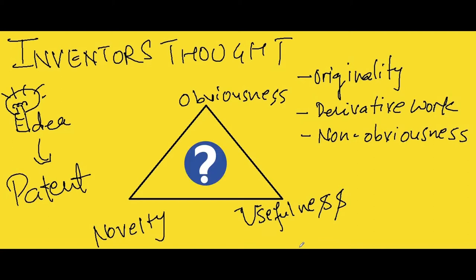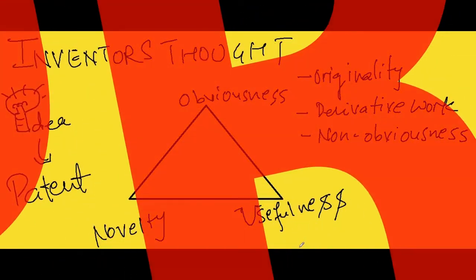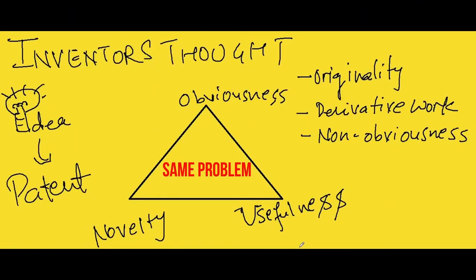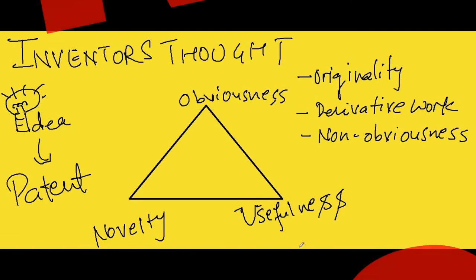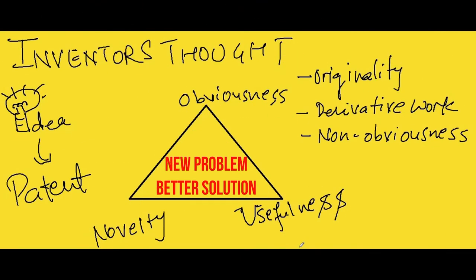So the question is, why many ideas fall under this category? Because you might be working on the same problem, which has numerous solutions available. So the hint is, find a new problem or find a better solution of existing one to overcome obviousness factor.